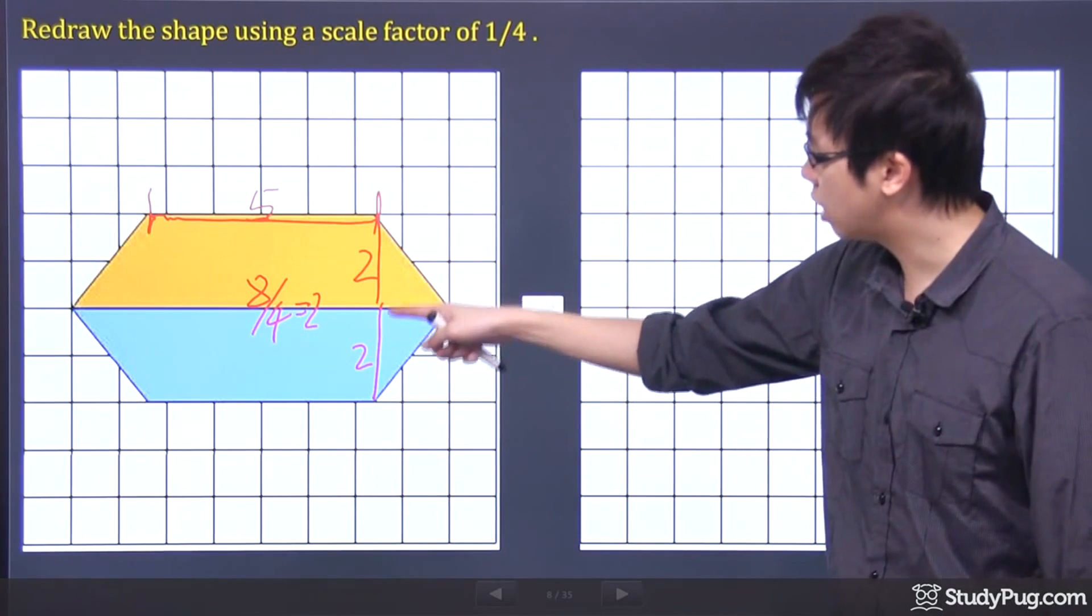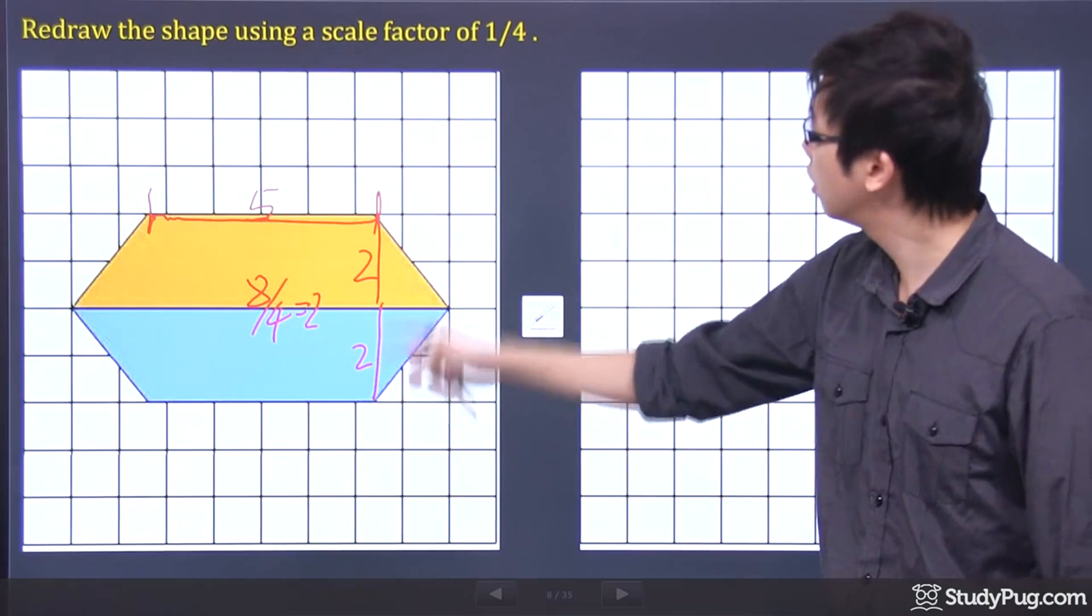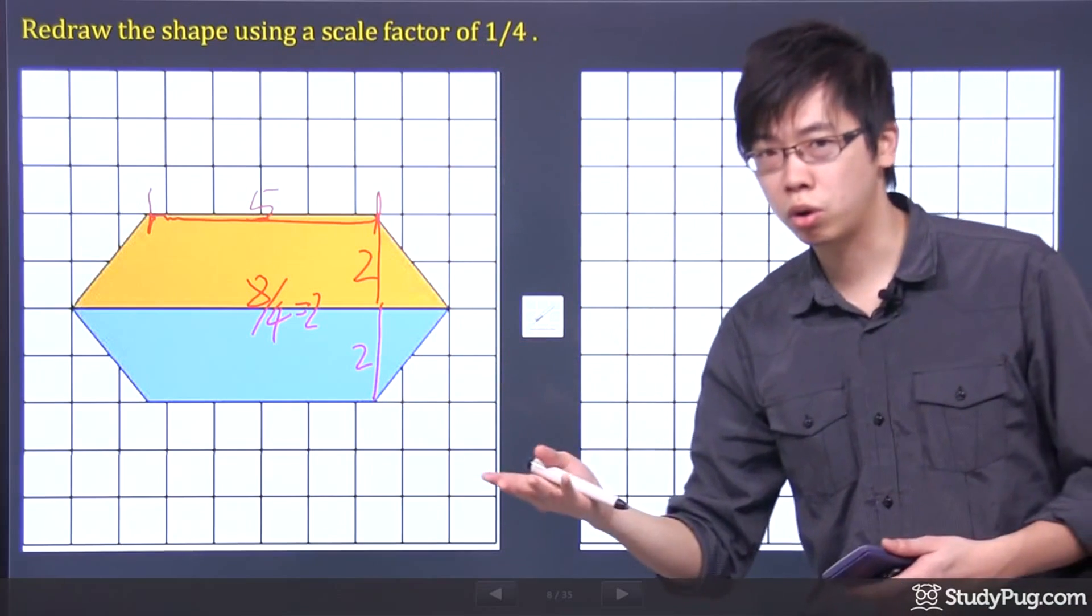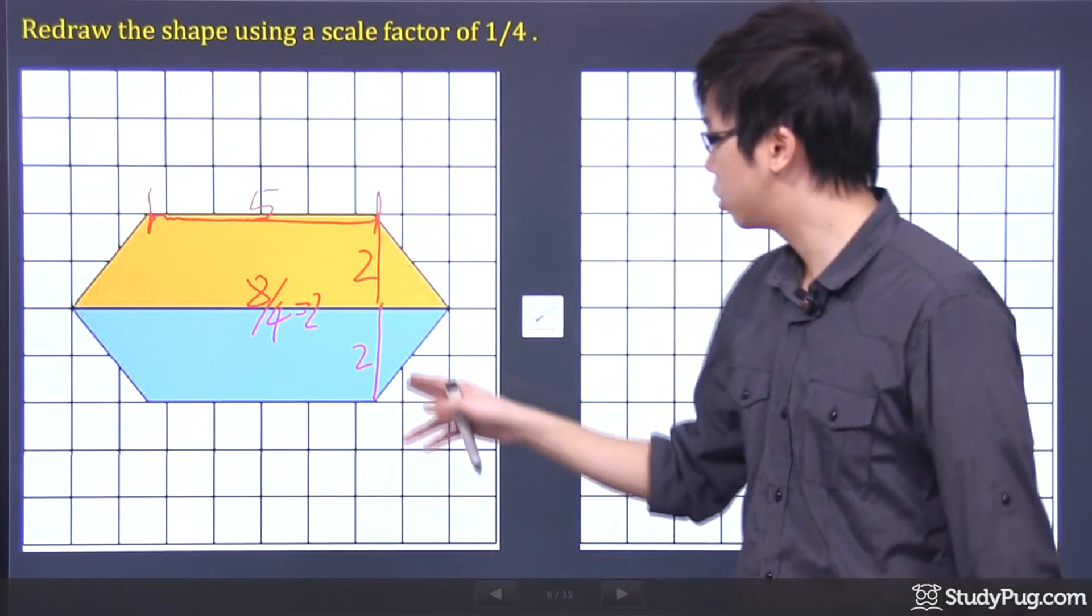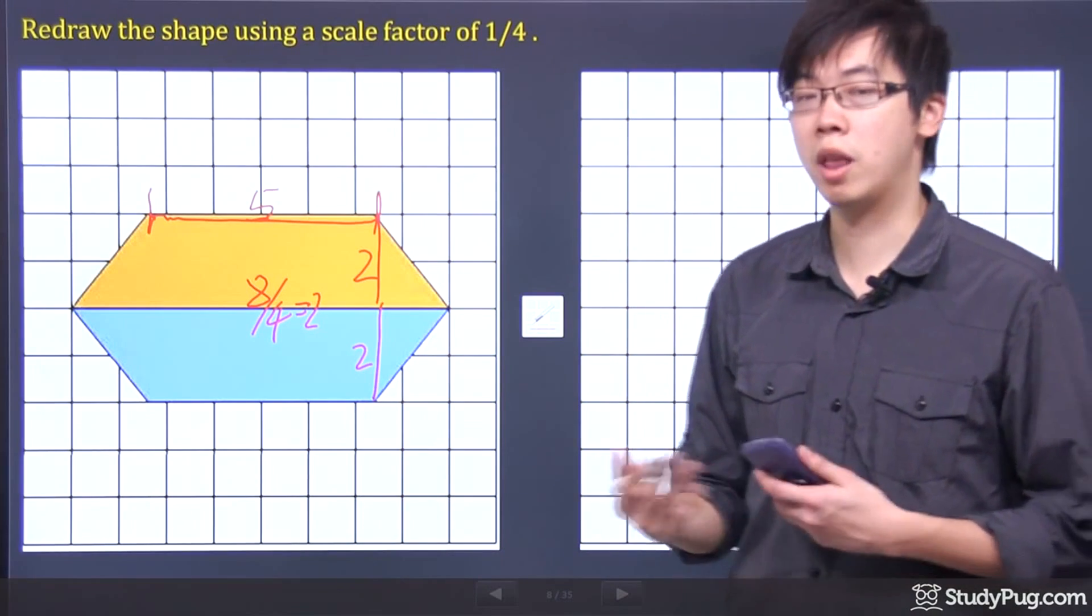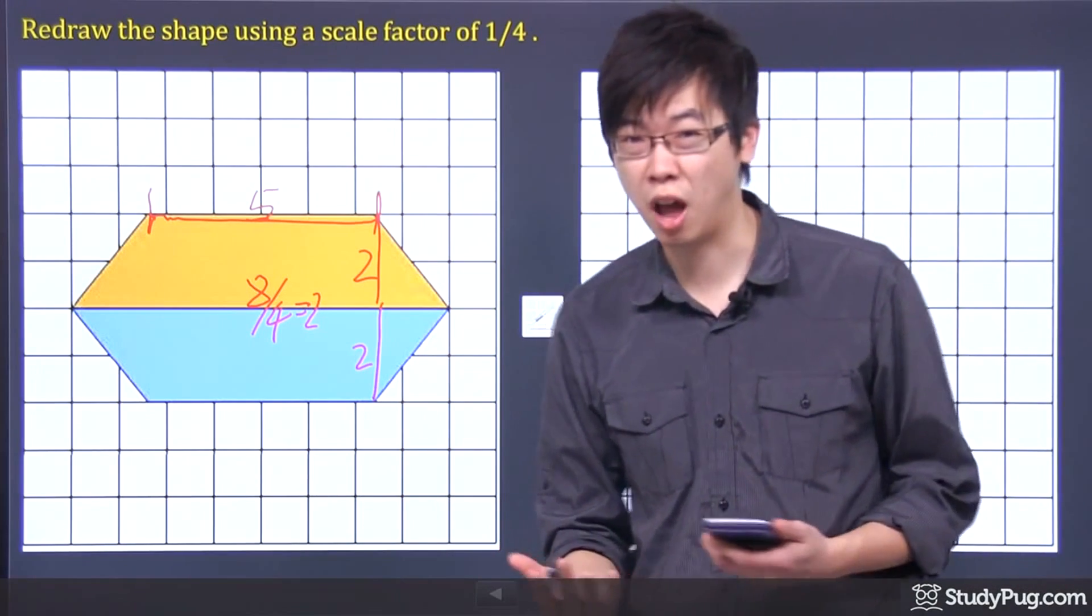It's going to go from the center down 2 units from the original. Remember, you're multiplying by a quarter, which means you're dividing by 4. So what's 2 divided by 4? It's going to be 1/2, and 1/2 is 0.5.